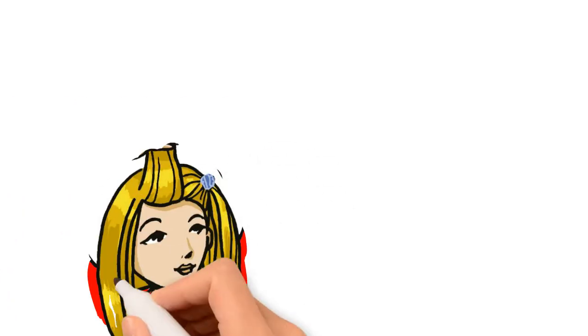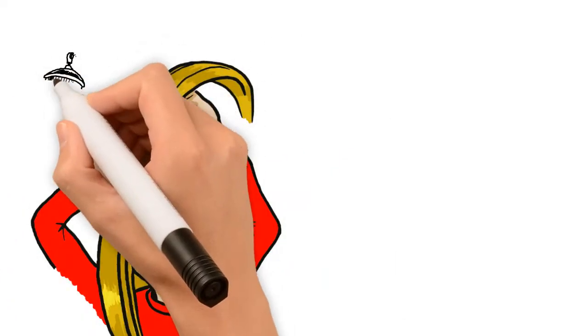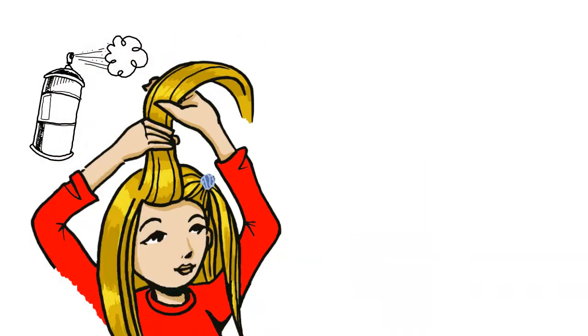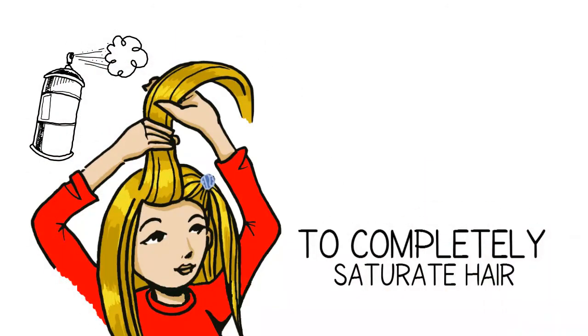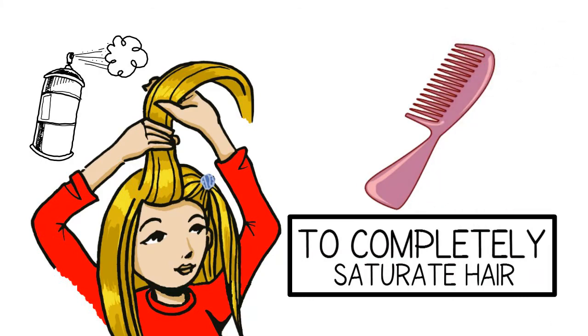Step 2: Divide hair in sections, and then spray each section thoroughly, on the surface as well as underneath, to completely saturate hair. Comb through to distribute product evenly.